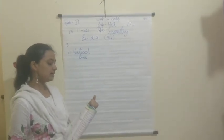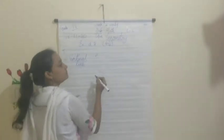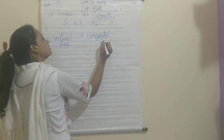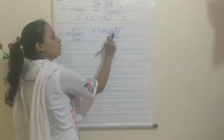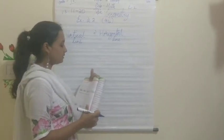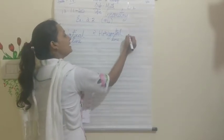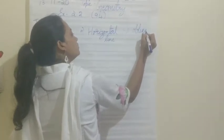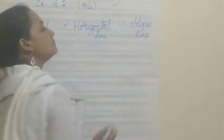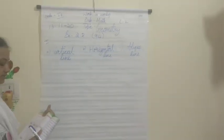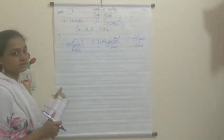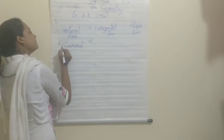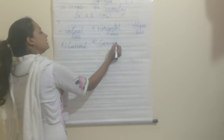The next one is a lying-flat line, which is called a horizontal line — H-O-R-I-Z-O-N-T-A-L — horizontal line. The third one is a slanting line, which is called an oblique line — O-B-L-I-Q-U-E — oblique line. Both D and E are bent lines, so both D and E will be C-U-R-V-E-D — curved line.